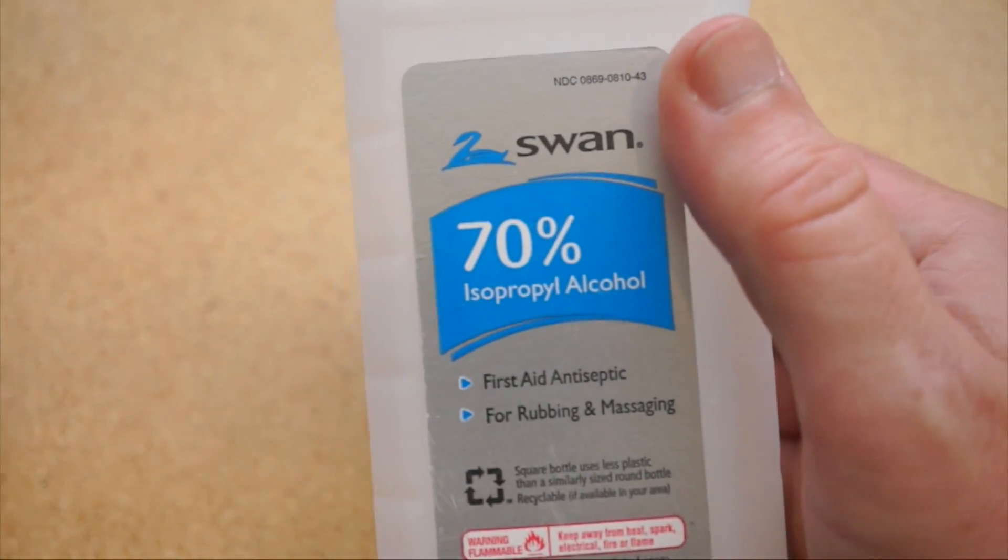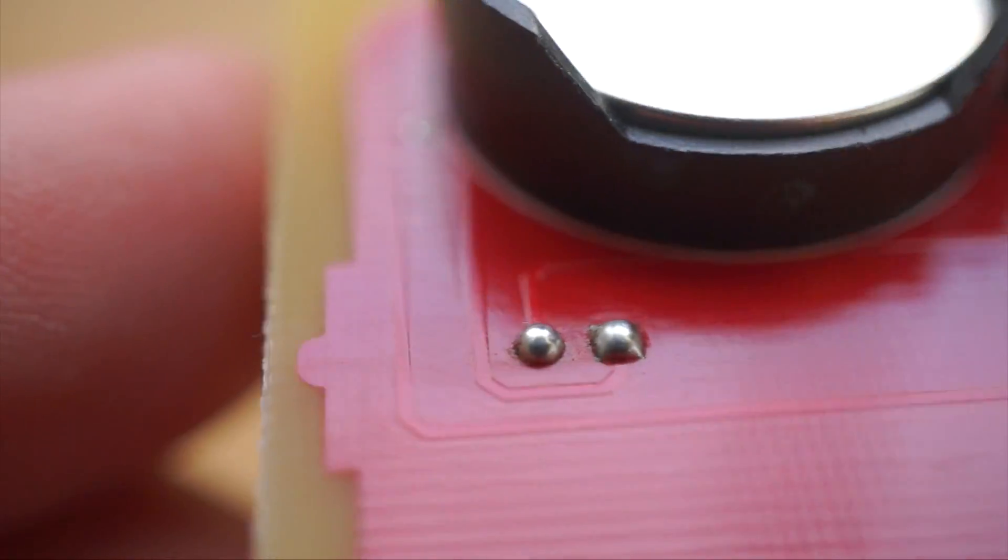You can clean up the extra flux with a swab of isopropyl alcohol and you've got a board worth showing off.